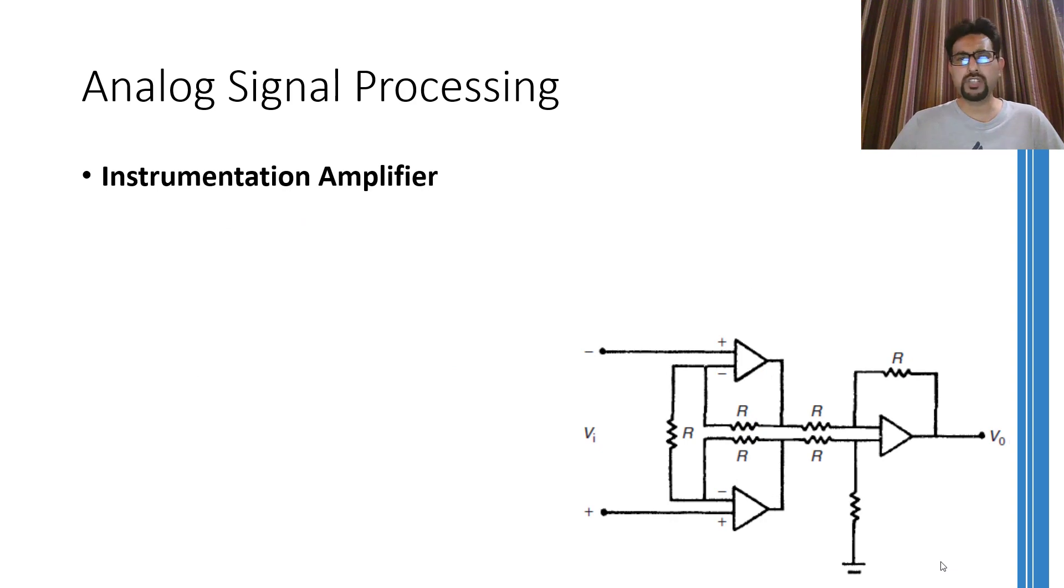A modification or possibly you can call an upgradation of a simple differential amplifier is called an instrumentation amplifier. This amplifier has certain advantages over simple differential amplifier. You must know that one basic advantage of using an operational amplifier is that it shows high input impedance. Therefore, to start off, an instrumentation amplifier has a much higher input impedance as compared to a simple differential amplifier.